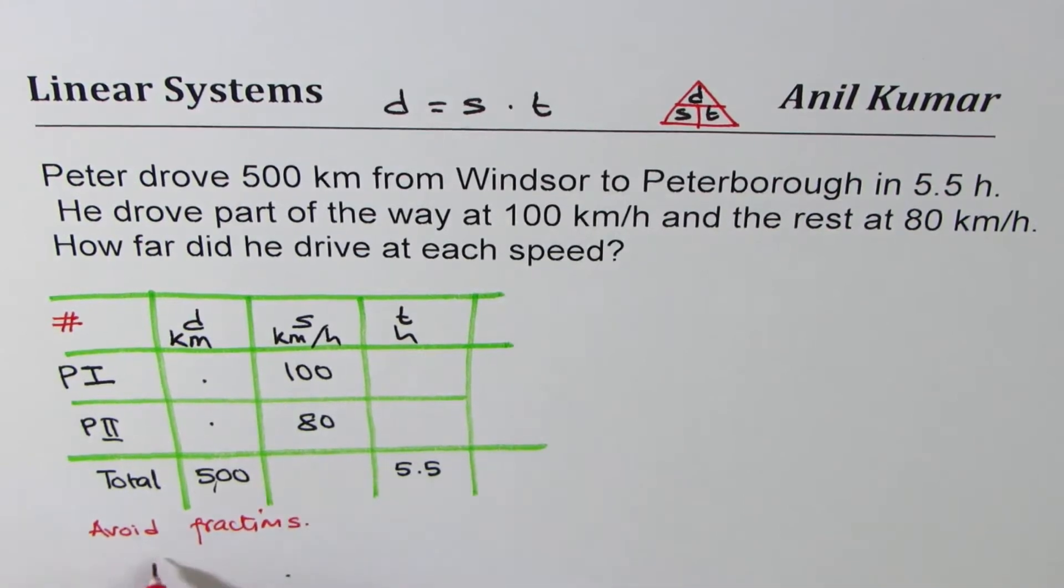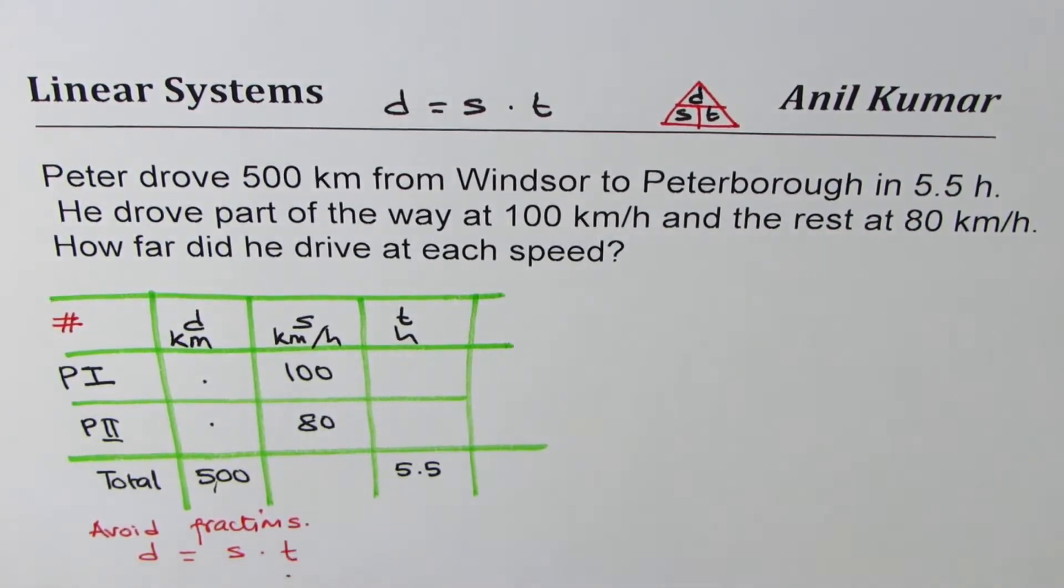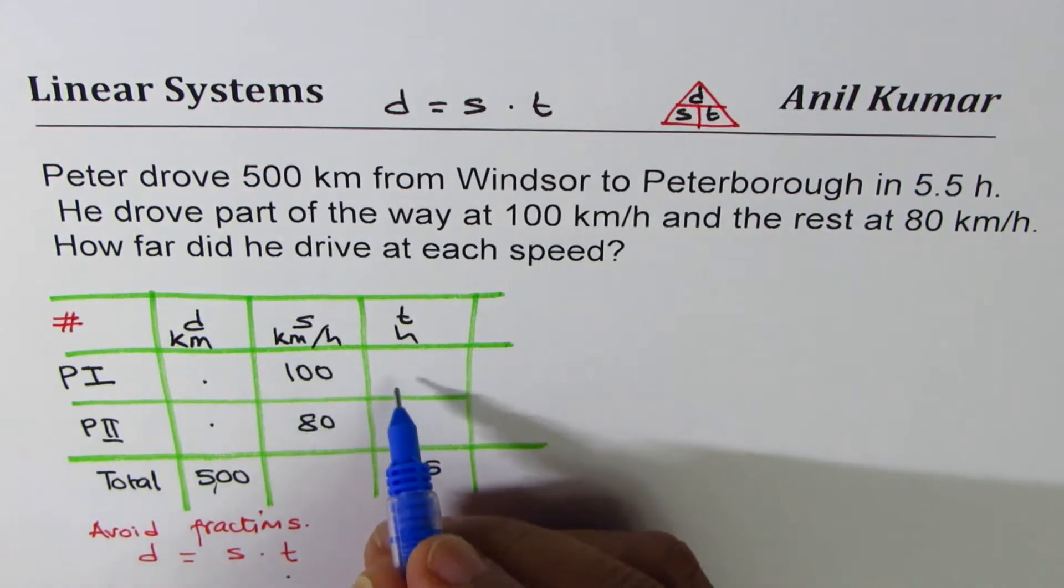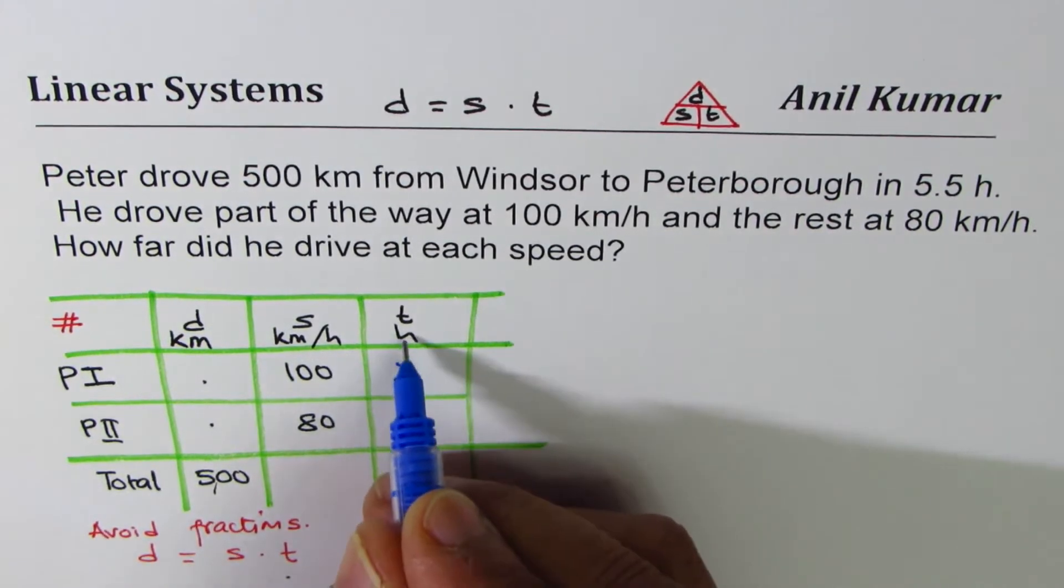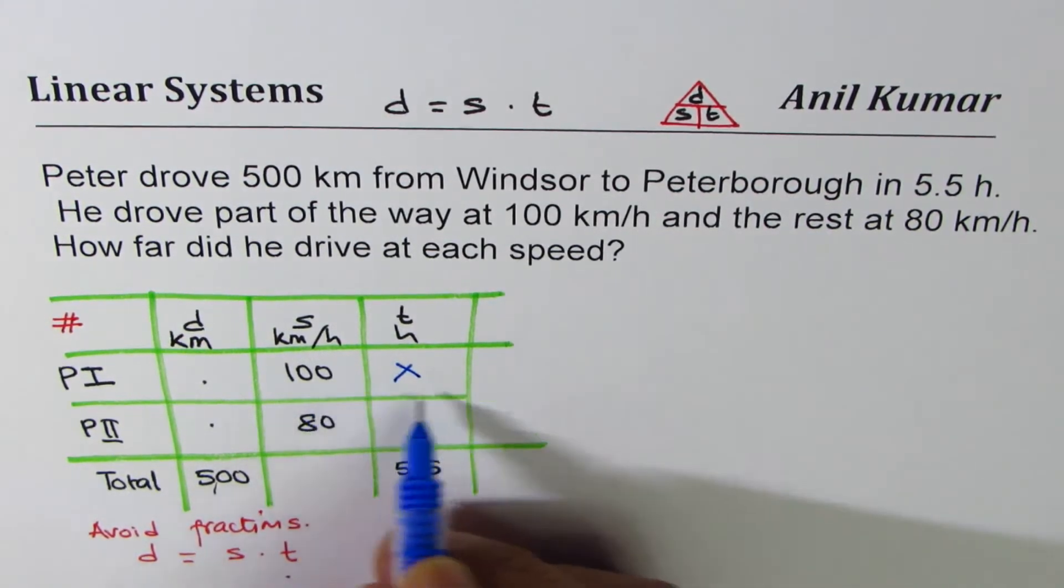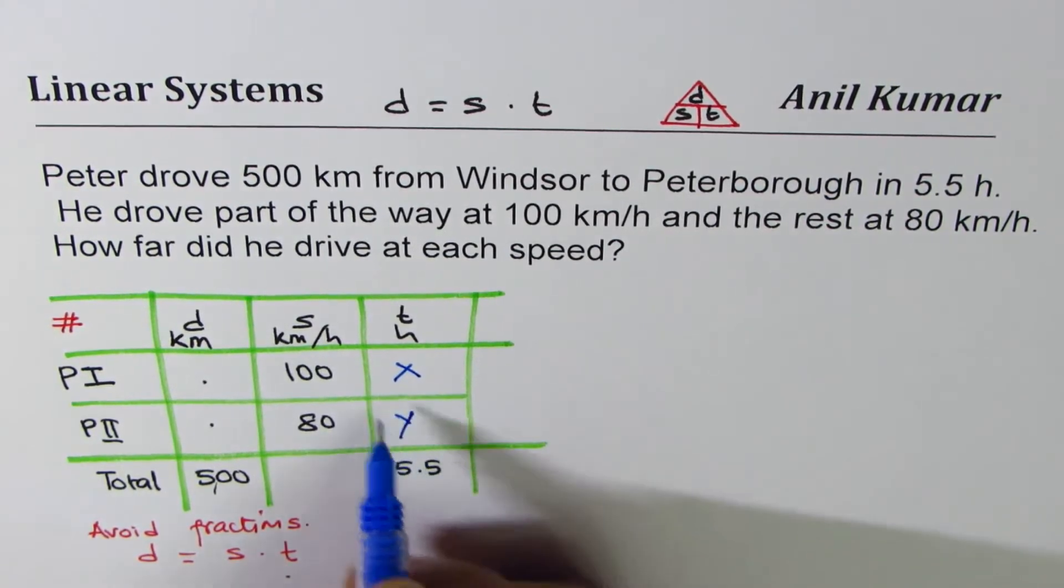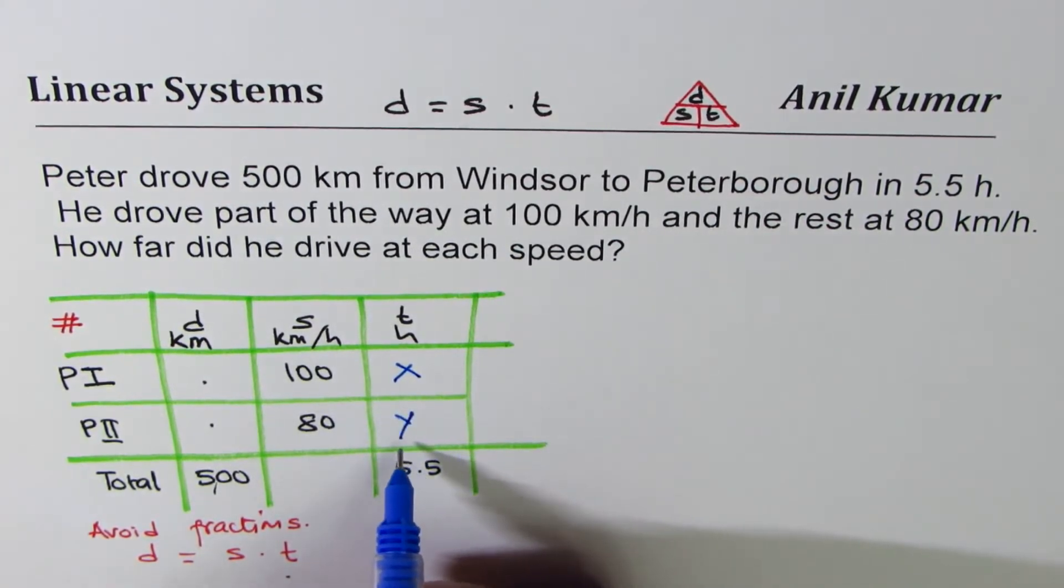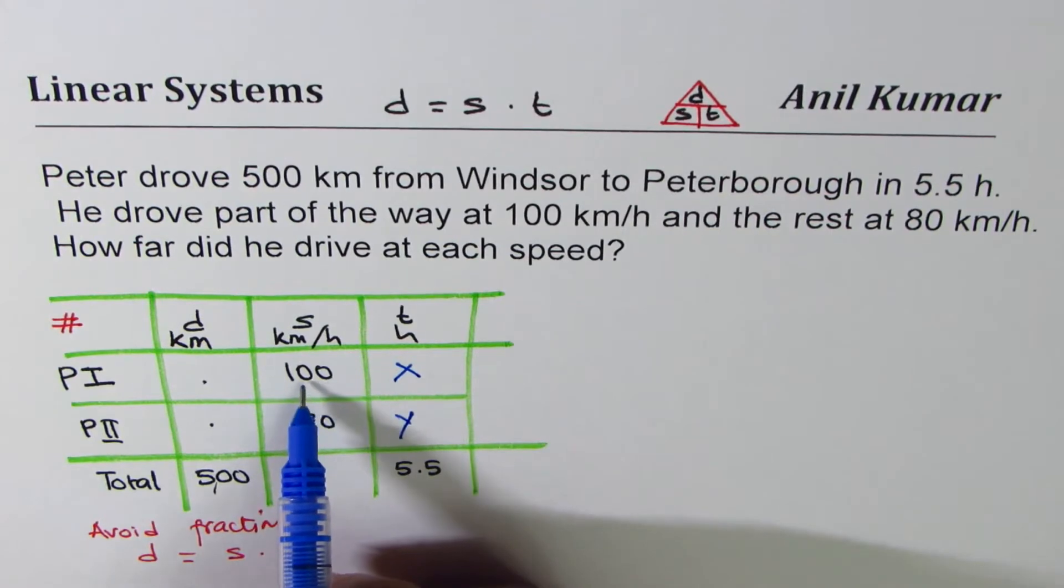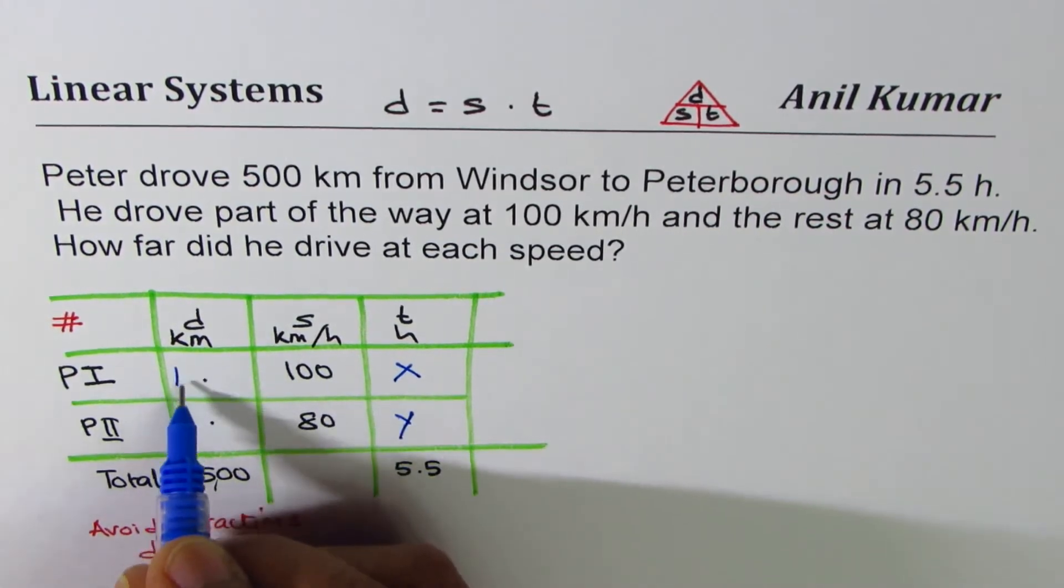What we'll prefer is to define time as our variable. Let's say x is number of hours at 100 kilometers per hour, and y is number of hours at 80 kilometers per hour. If x is the time and speed is 100, distance will be 100x. In this case, 80y.